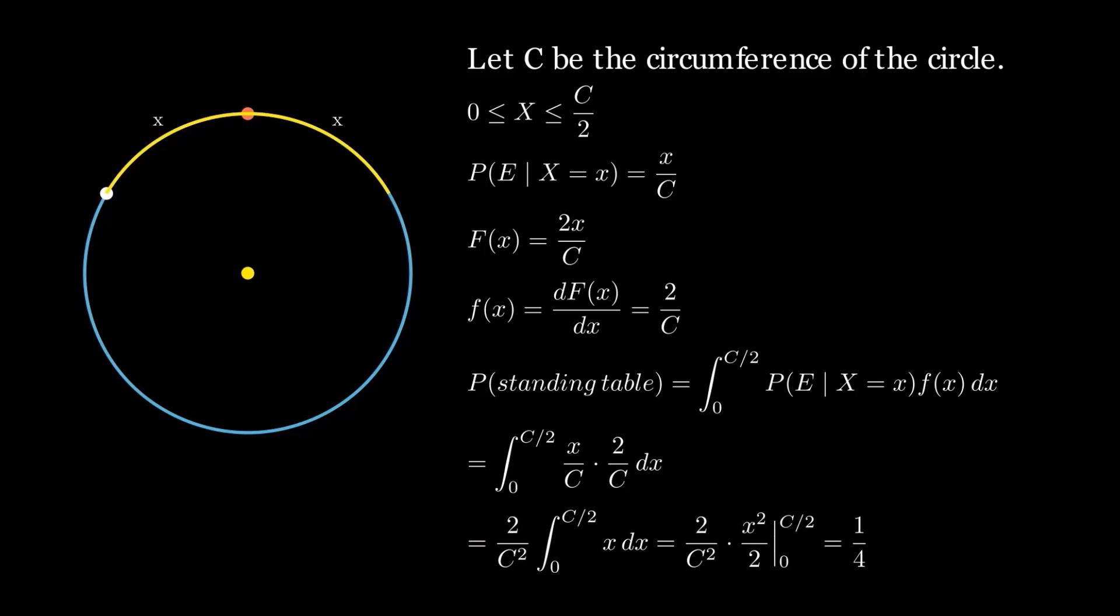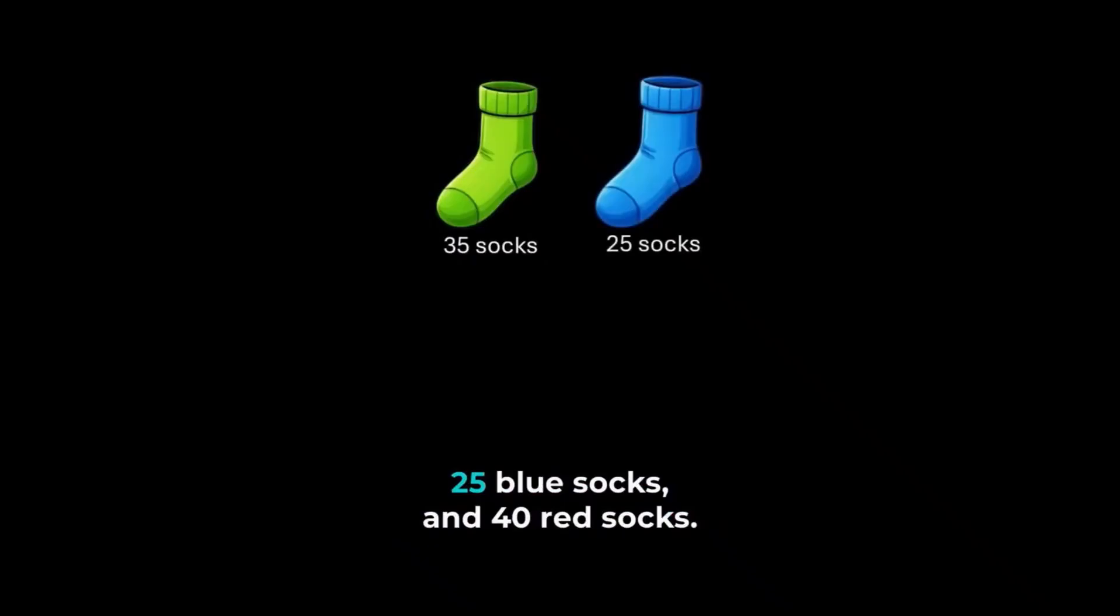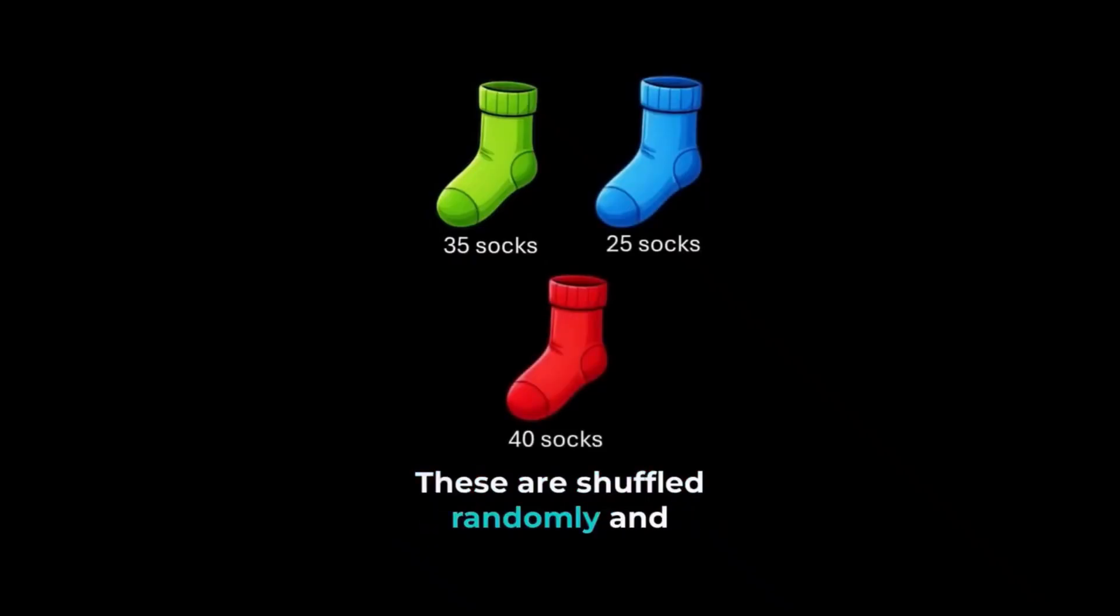Let's consider another problem. Suppose we have 35 green socks, 25 blue socks, and 40 red socks. These are shuffled randomly and are drawn one by one without replacement until socks of only 2 colors remain. So, what is the expected number of socks remaining? Post your answers in comments.